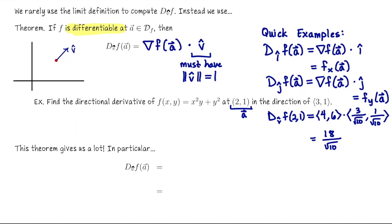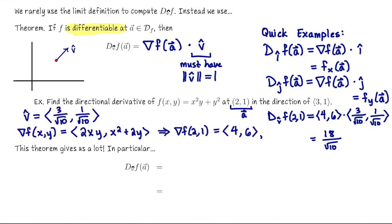This theorem gives us a lot. One thing it gives us is a fast way to compute directional derivatives that don't involve taking limits of difference equations. But we get more out of this because we're saying that a directional derivative for a nice differentiable function can be computed with a dot product, which means that what we know about the dot product can give us information about the directional derivative.